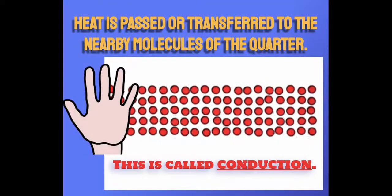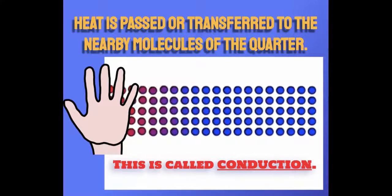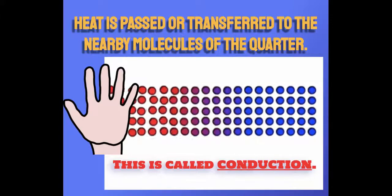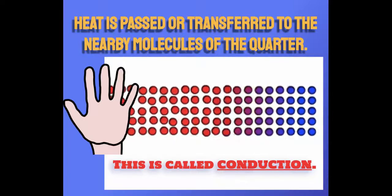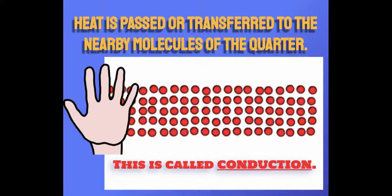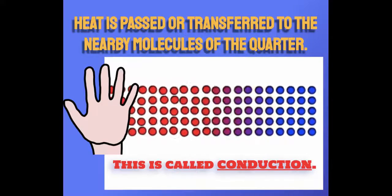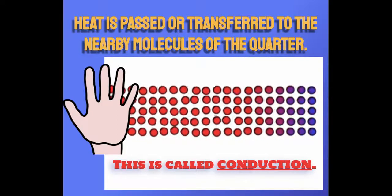Now, with regard to the hand, heat is passed or transferred to the nearby molecules of the quarter from Maya's hand by a process that is called conduction. And you can see those little circles moving around; they go from being blue to being red, and it kind of moves across from the left side of the screen to the right side of the screen.